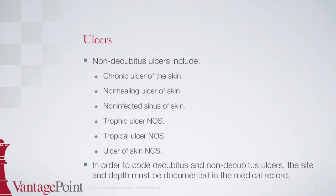Conversely, if the following conditions are documented, they code to non-decubitus ulcers: chronic skin ulcers, non-healing ulcers, non-infected sinus of skin, trophic ulcer, tropical ulcer, or just plain ulcer. Remember that both the site and depth of the ulcer, as well as the type, are all needed in order for the correct code to be selected.